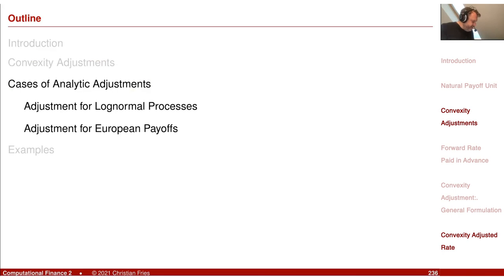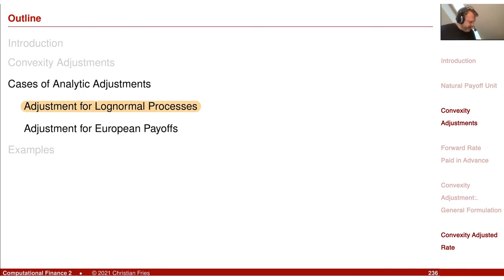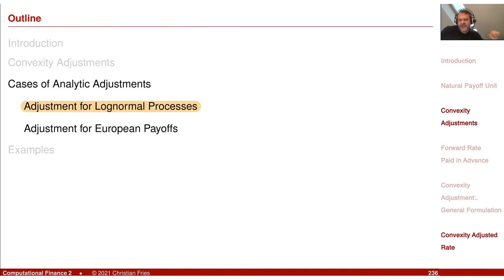We now have the general scheme, and we cannot go further unless we know more about the function f or the underlying model. If the underlying model is log-normal, or if the function is a European option, we can derive more. But we have now derived the general scheme. You can go back and review some of the examples in view of these formulas — we can do this in the next session. Thanks.